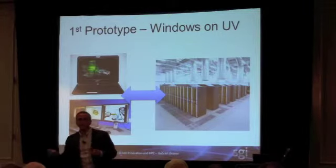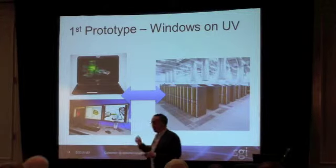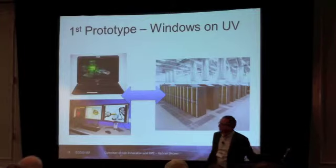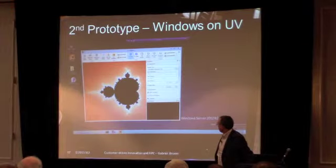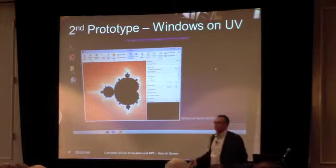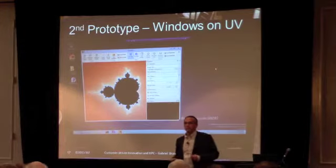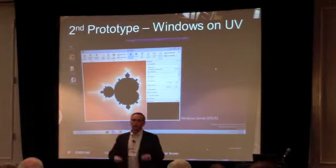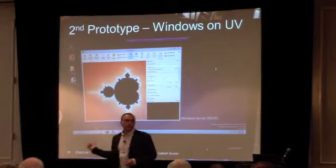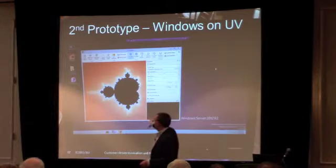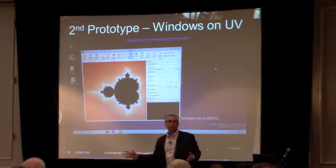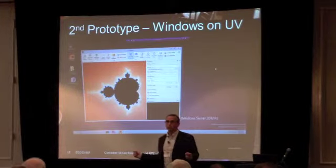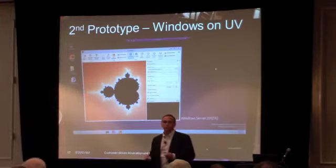Then you do a second iteration, then a third iteration. And like that, we ended up running Windows. The second prototype was Windows running inside a VM from my desktop. Two weeks later, I was able to run Windows as a demo from my desktop anywhere in the world, connecting back to the office — Windows Server, a terabyte of memory, as many CPUs as you wanted. It's a question of iterating quickly. And now it's part of the product — if you get the UV, you can get Windows as an option running there.